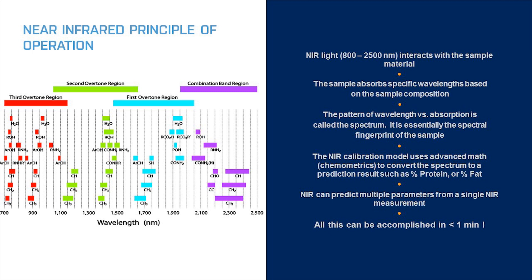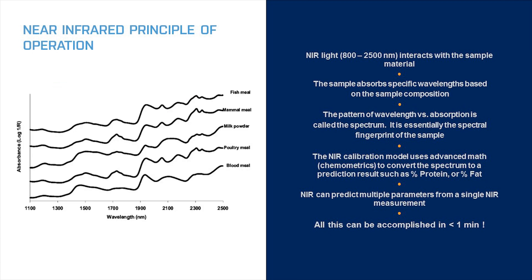The near-infrared spectrum is simply a chart with the wavelengths on the x-axis and the absorbance intensity on the y-axis. Here are some examples of near-infrared spectra of feed meals and milk powder. If you look closely you'll see that some absorption patterns are more prevalent than others.